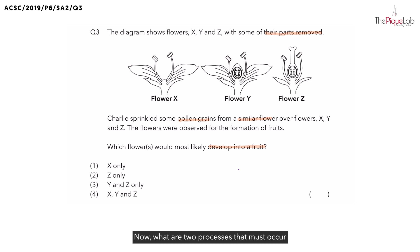Now, what are the two processes that must occur for a flower to become a fruit? We have pollination and fertilisation. Which process must occur first? Pollination must occur first, followed by fertilisation.